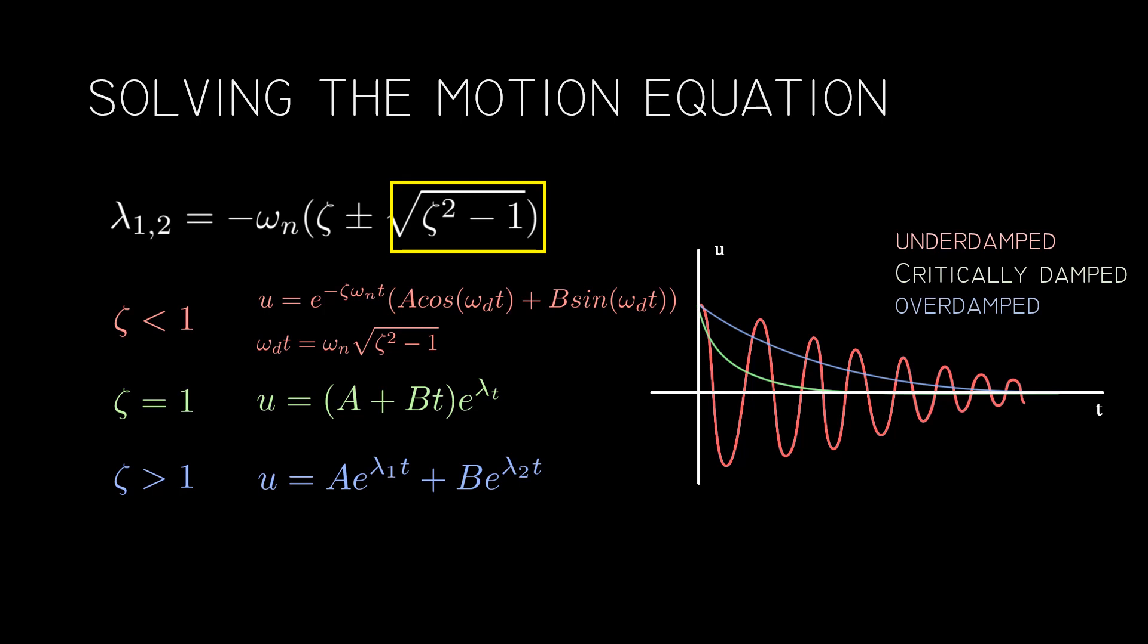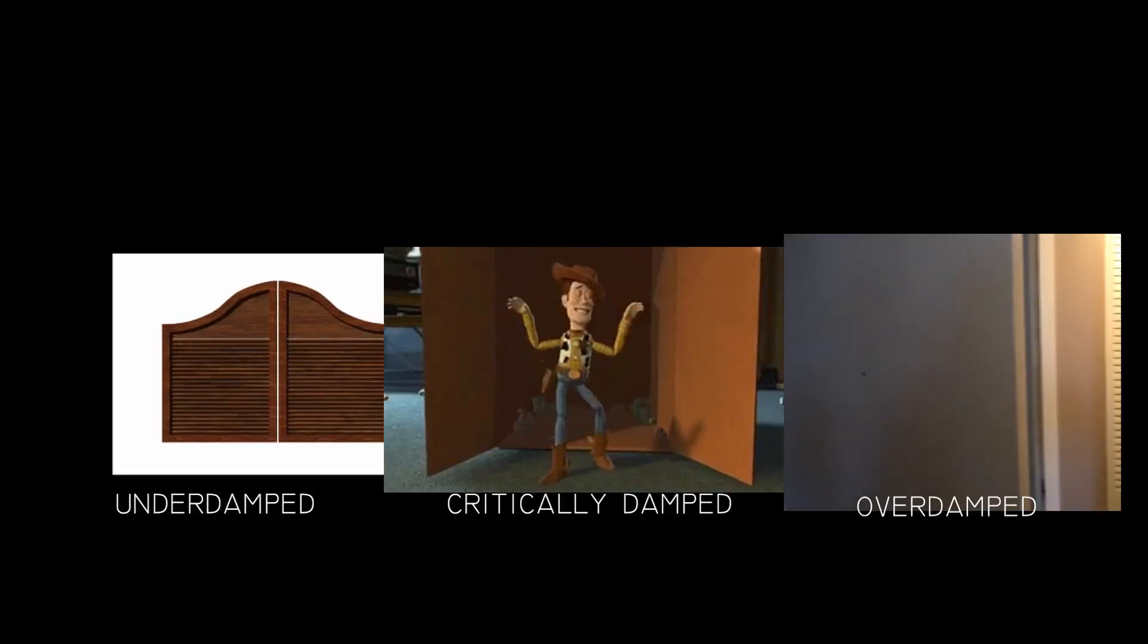In the first case, if zeta is equal to 0, the exponential factor is equal to 1, and the system becomes a simple harmonic oscillator. Take a moment to appreciate why the functions produce these graphs by imagining a swivel door with a weak damper, a good damper, and a slow damper.